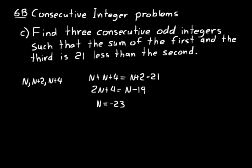Now, that's not our answer. Remember the question was find three consecutive odd integers. That's just the first one. So we need to write n is negative 23. n plus 2, that's negative 23 plus 2. So that would be a negative 21. And then n plus 4, that would be a negative 19. So those are our integers.